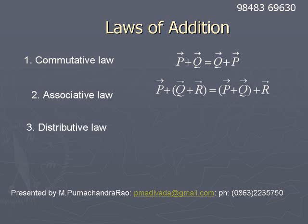Then, distributive law. If p̄ plus q̄ is a vector, k times this vector will be equal to k times p̄ plus k times q̄. By adding k times q̄ to k times p̄, we will get the vector k times (p̄ plus q̄).